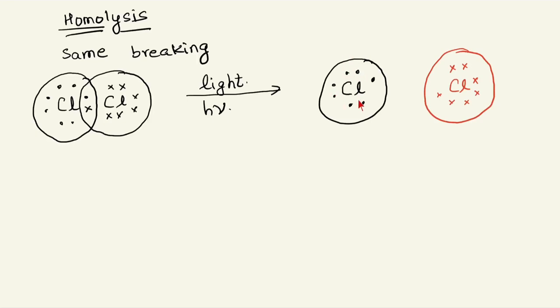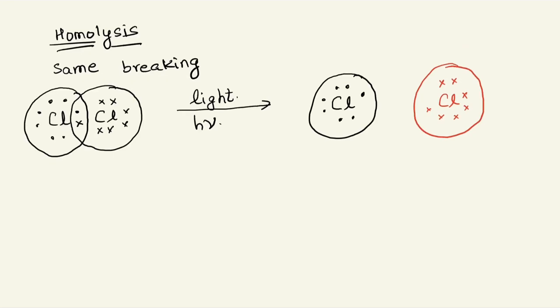Notice: each chlorine has paired electrons except for one unpaired electron. To show this unpaired electron, I write Cl with a small dot on top — the dot represents the unpaired electron. Same way the second chlorine atom has a small dot on top. This type of intermediate, where each atom has an unpaired electron, is formed during the course of a chemical reaction — we call them free radicals.